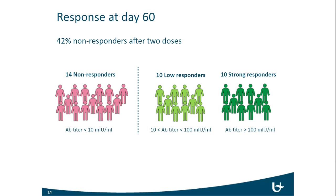At day 60, we started with 34 individuals. We saw that 42% were non-responders — bearing in mind we had only given two of the three mandatory doses. Using the standard protection definition of an antibody titer less than 10 international units, we found 14 non-responders. We can also differentiate among responders between low responders — antibody titers between 10 and 100 — and strong responders with titers larger than 100.